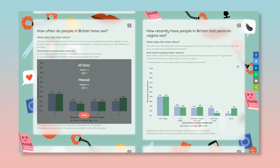The median and IQR are less meaningful for the behaviours and attitudes that have categorical responses. For example, opinions of one night stands, because there are so few response options when participants answer this question.